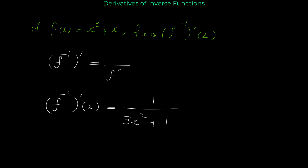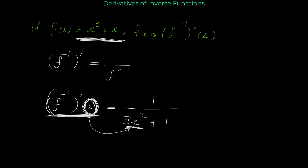Here you should be very careful — this is a little tricky. A common mistake is that you might think you have to substitute 2 for x. But pay attention: the number 2 here is not x for f of x. This 2 is x, but it is x for f inverse.